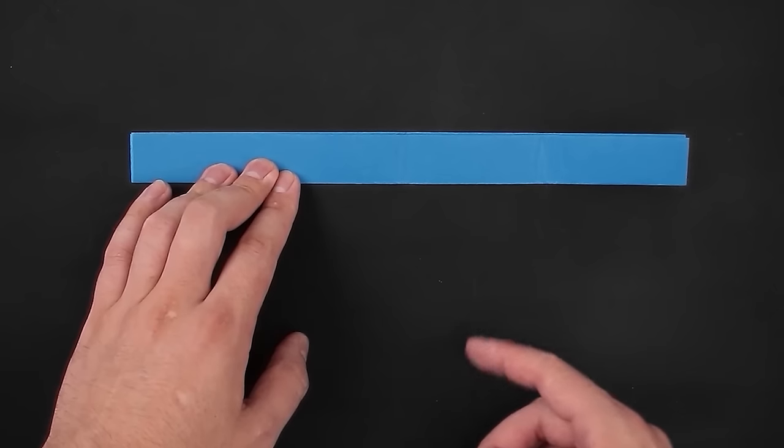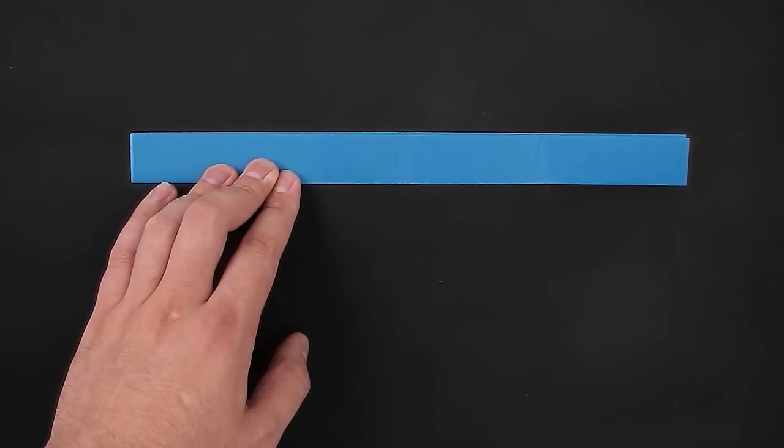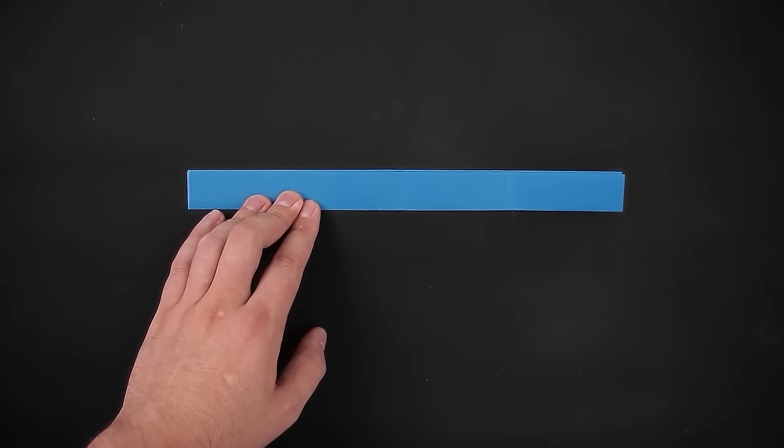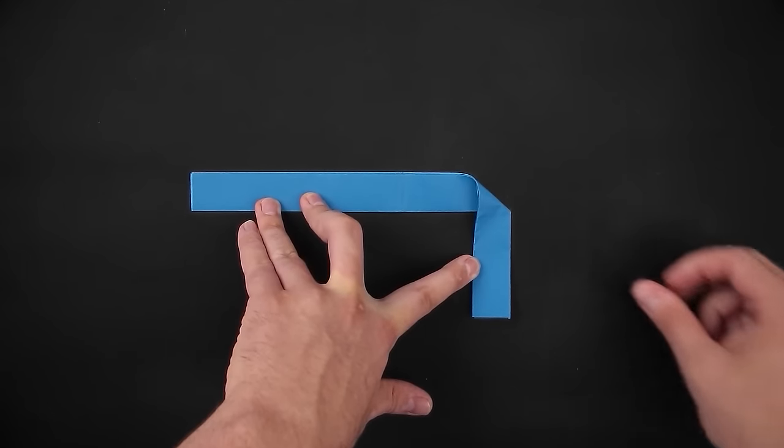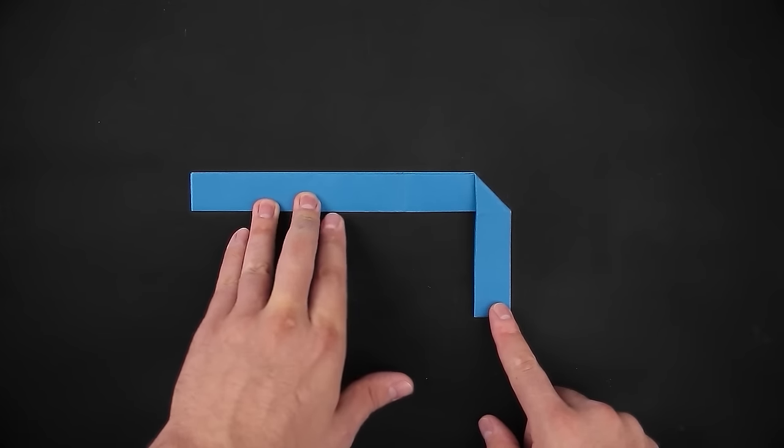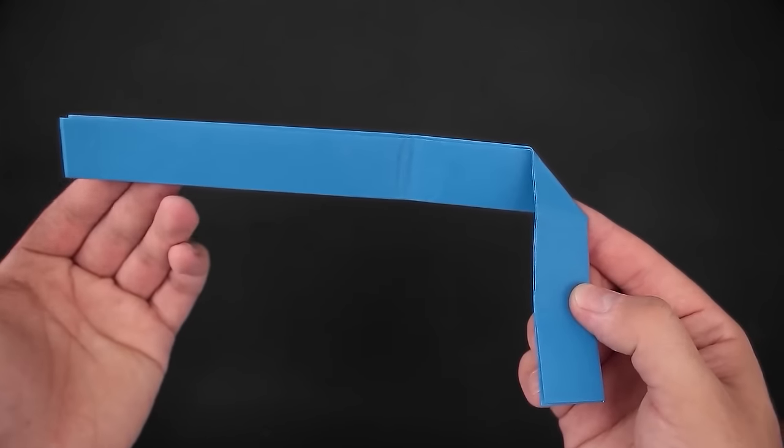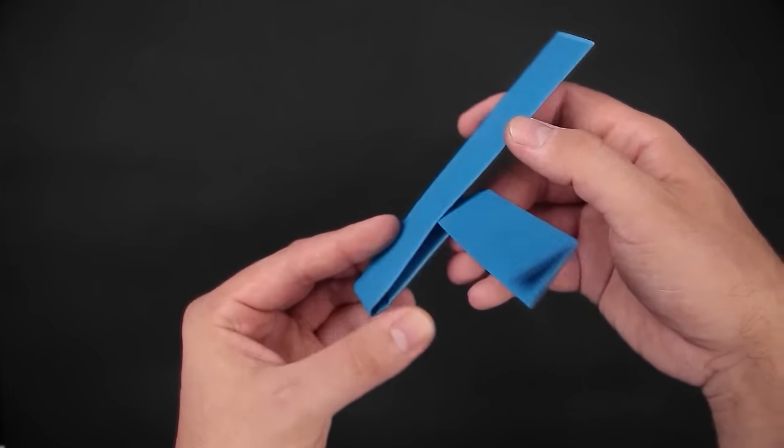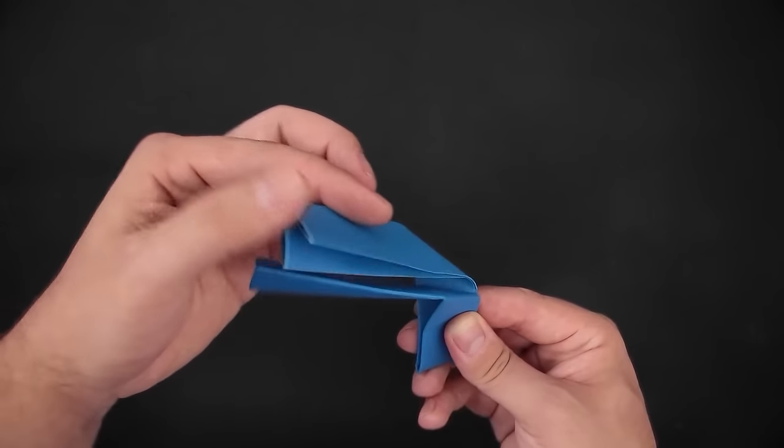And now we'll bring the same mark, the mark we just made, to the bottom edge. Folding like this. Okay, having the reference we can close the paper using the middle line. And now using the existing fold as a guide, we can fold the other side in the same way, so both sides are equal.